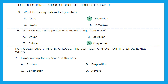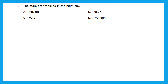For questions 7 and 8, choose the correct option for the underlined word. Question 7: 'I was waiting for my friend in the park' — the underlined word is 'in.' Is it pronoun, preposition, conjunction, or adverb? The word 'in' is a preposition because it points to a location or position within something. Option B is right. Question 8: 'The stars are twinkling in the night sky' — the underlined word is 'twinkling,' which is an action word, that is a verb. Option C is the right answer.